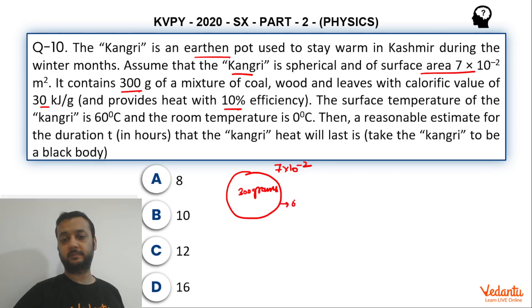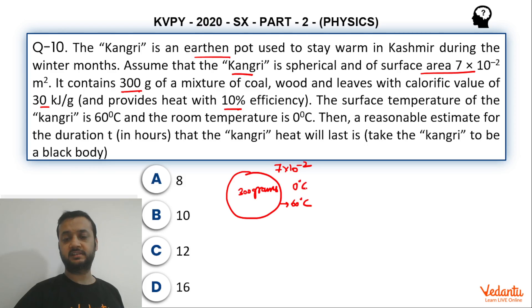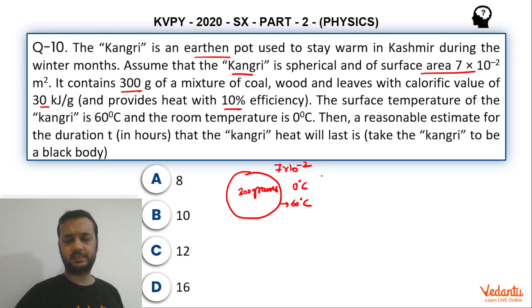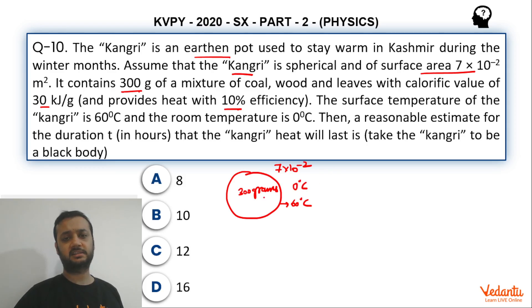The surface temperature of the kangari is 60°C and the room temperature is 0°C. The question asks how long the kangari will last — that is, for how long we can keep it operational to provide heat.